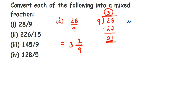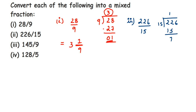The second question: we have 226 divided by 15. We do the same division. 15 ones are 15, remainder 7 — drop the 6 to get 76. 15 times 5 is 75. Subtract and the remainder is 1. The quotient is 15.